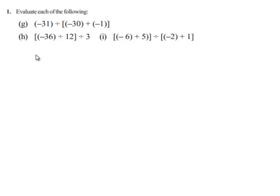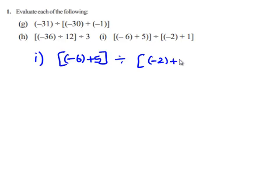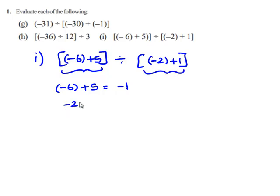We will see the next problem. The question is negative 6 plus 5 within the brackets divided by negative 2 plus 1 within the brackets. First we will solve the values within the brackets. That is negative 6 plus 5, which becomes negative 1. And then negative 2 plus 1 becomes negative 1.